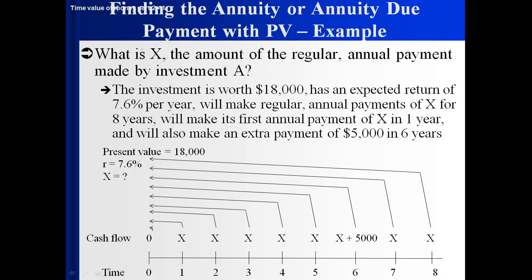In this example, we want to find X, which is the amount of the regular annual payment made by Investment A. Investment A is worth $18,000, has an expected return of 7.6% per year, and will make regular annual payments of X for eight years — so eight payments total. The first payment is in one year.